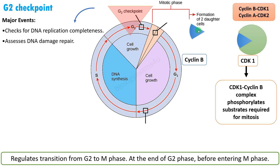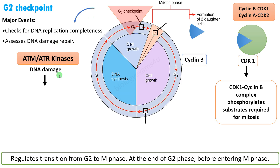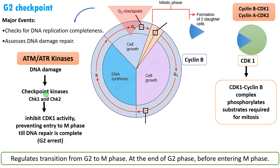The cyclins involved are cyclin B and CDK1, and cyclin A and CDK2 are also involved at times. The regulatory proteins are ATM-ATR kinases. These proteins sense DNA damage and activate checkpoint kinases CHK1 and CHK2, which can inhibit CDK1 activity, preventing entry to M phase until DNA repair is complete, or causing G2 arrest.